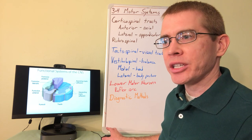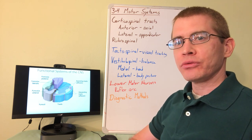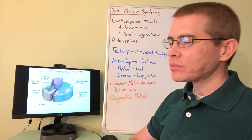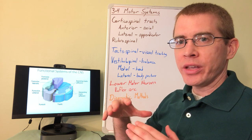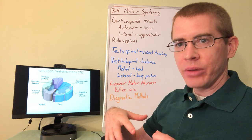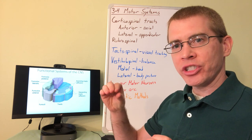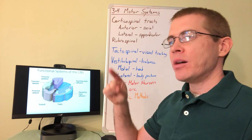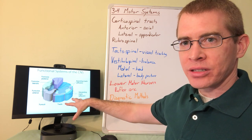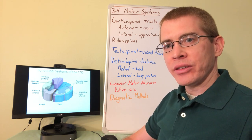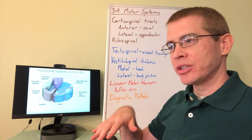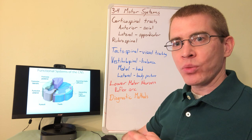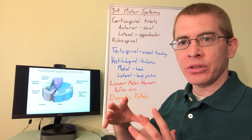Welcome to lecture 3-4. We're continuing on the theme of functional regions of the spinal cord, focusing on the motor systems. We can divide these systems based on conscious versus non-conscious motor systems. The conscious systems have a two-neuron chain beginning in the cortex — the upper motor neuron sends an axon through white matter tracts to a lower motor neuron in the anterior gray matter. A non-conscious motor system has its upper motor neuron in a brainstem nucleus, as seen in the tectospinal and vestibular tracts.